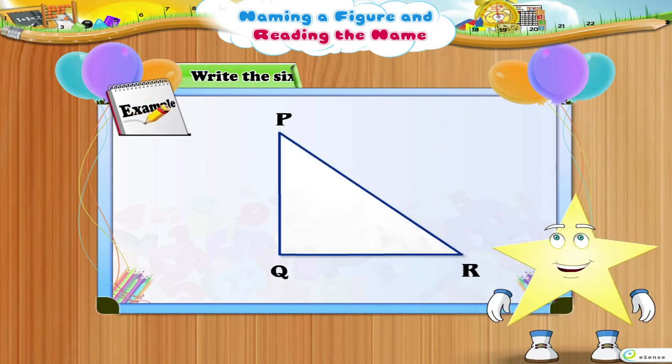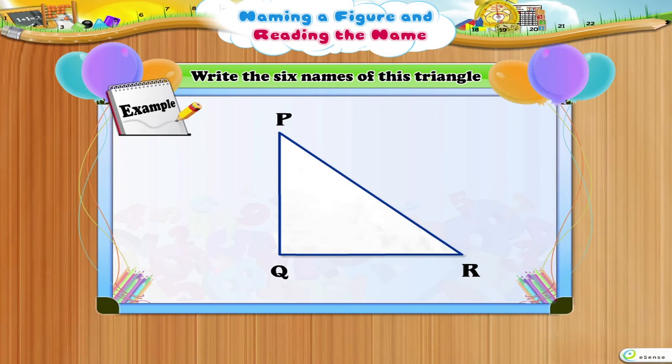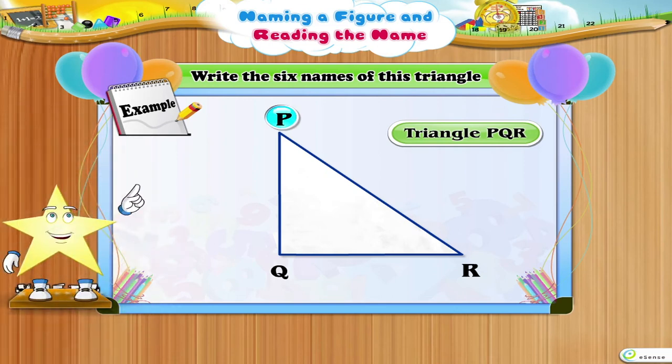Write the six names of this triangle. The six names of this triangle are: Triangle P, Q, R.